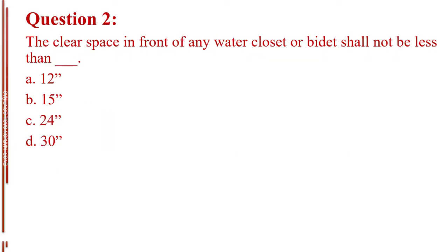Question number 2. The clear space in front of any water closet or bidet shall not be less than blank. Letter A, 12 inches. Letter B, 15 inches. Letter C, 24 inches. Letter D, 30 inches.